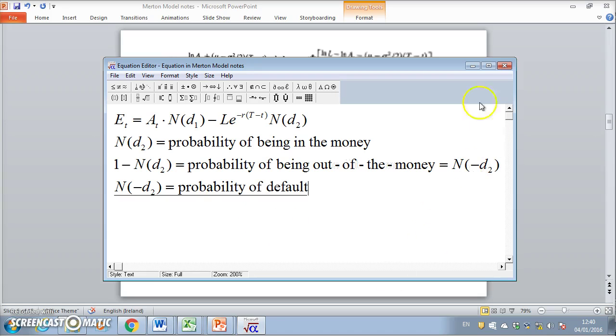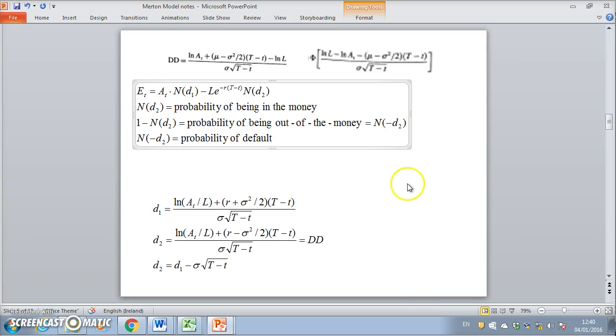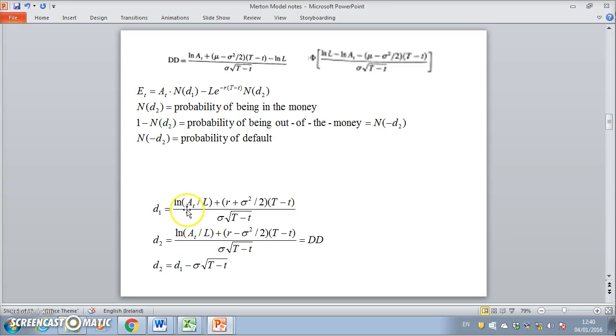But the question then arises: can we parameterize, do we have values for A, L, sigma, the time horizon, and how do we go about estimating those or getting proxies for each of those values? If we set out this framework, how then do we estimate the probability of default?